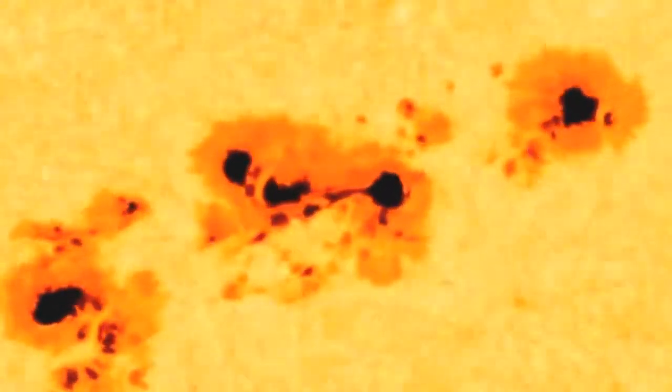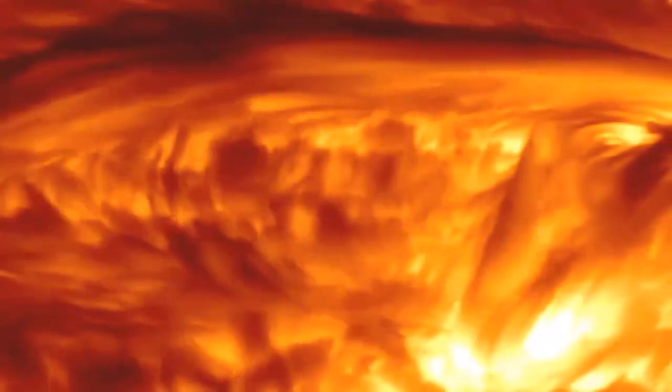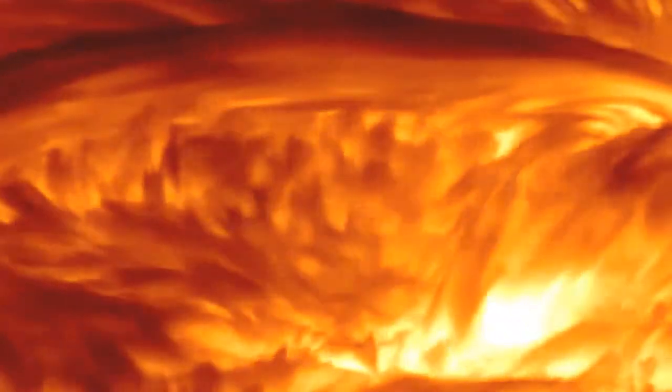The best clue comes from these. Sunspots. Dark patches which can linger on the sun's surface for weeks at a time. A sunspot is a massive region, several times the size of the Earth, which appears on the sun as a dark spot. It's dark because it's relatively cool compared to its surroundings. And it's cool because the magnetic fields are so strong that they're suppressing the flow of heat from below.